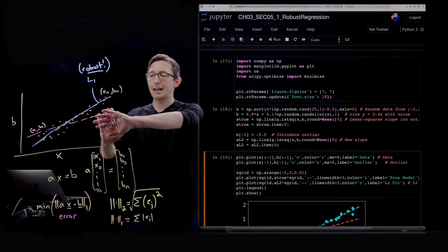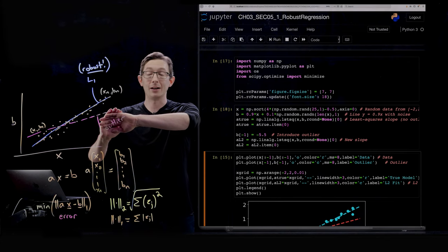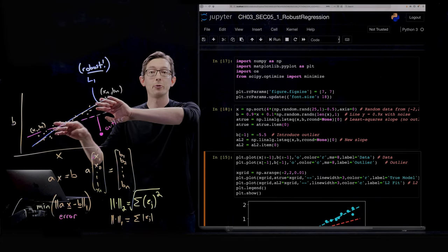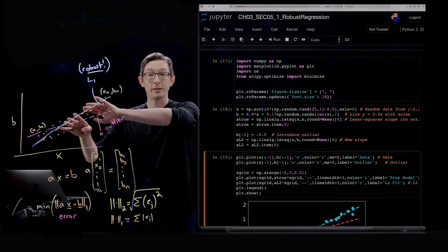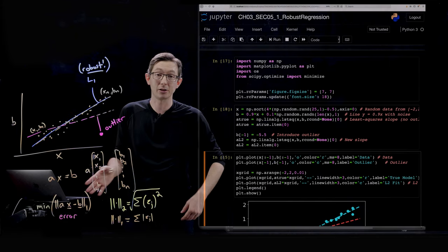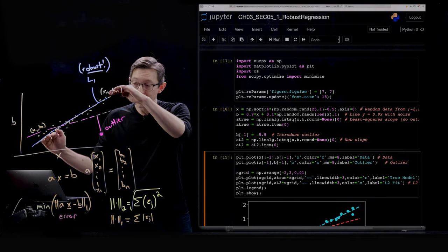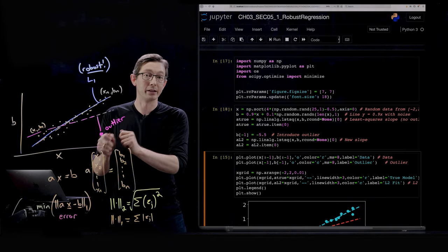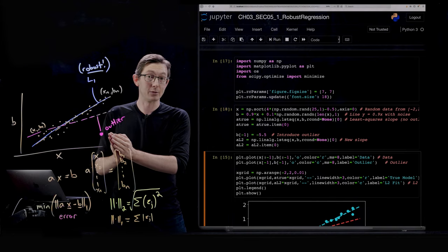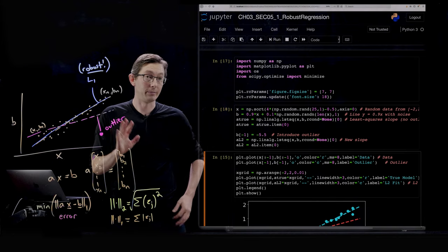Now I should point out, if I didn't have this outlier, least squares would actually do a pretty good job if I just had white noise on top of my data. Least squares actually does a great job of estimating the slope if I just had white noise. It's only when I introduce that outlier that it's going to really break my least square solution and require me to do something different.